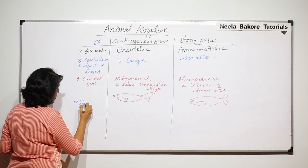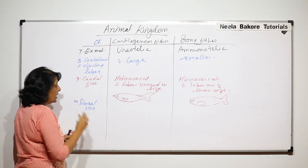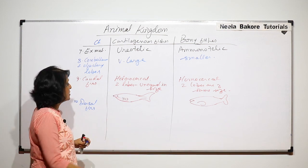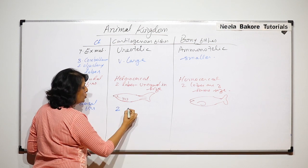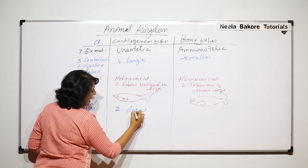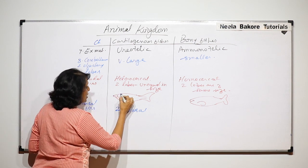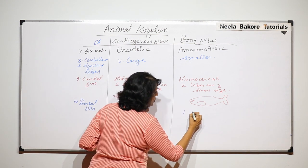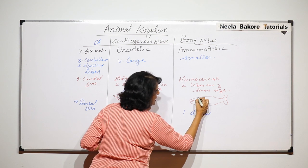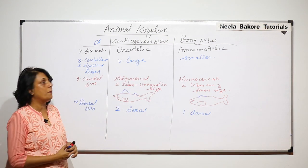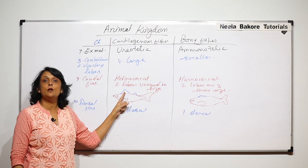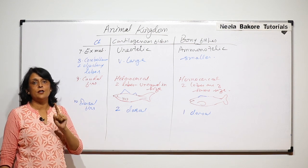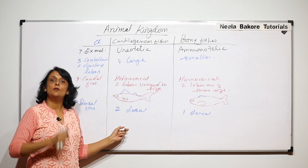The next comparison is on dorsal fins. Dorsal fins are unpaired fins in both groups, but in cartilaginous fishes there are two dorsal fins — the anterior one is larger and very prominent. That is why when sharks swim, that pointy dorsal fin is seen above the water surface. In bony fishes there is only one dorsal fin, which is not as prominent.